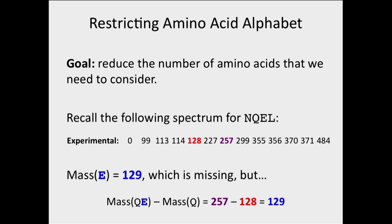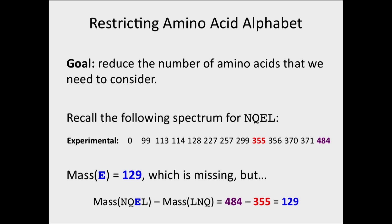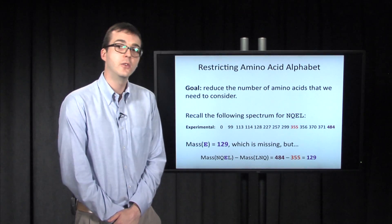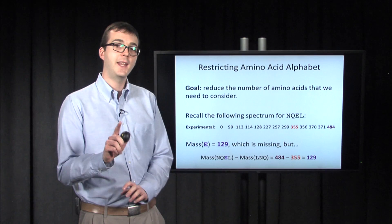Can we find 129 anywhere else? The answer is yes. ELN is another subpeptide of this cyclic peptide NQEL, as is LN. The masses of these two are in the spectrum as well: 356 minus 227 gives us 129. We even get one more — the mass of the entire peptide is 484, and the mass of LNQ, the subpeptide that doesn't include E, is 355. When we subtract those, we get 129. So 129 is still there.